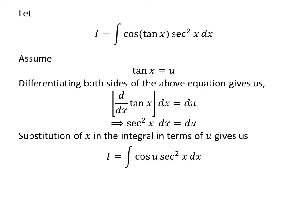Substitution of tangent of x by our assumed value in the integral I gives us I is equal to the integral of cosine of u times secant squared of x.